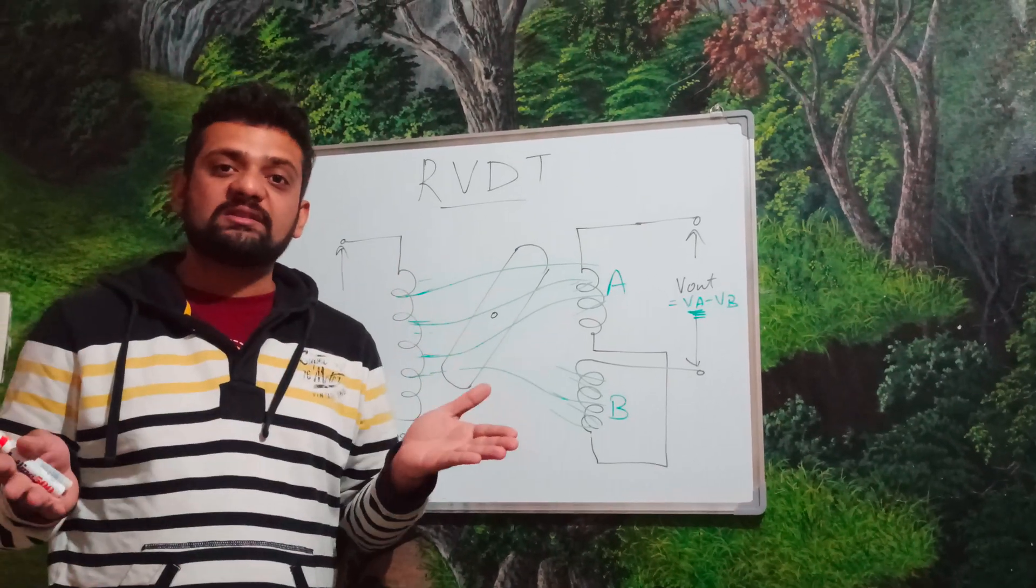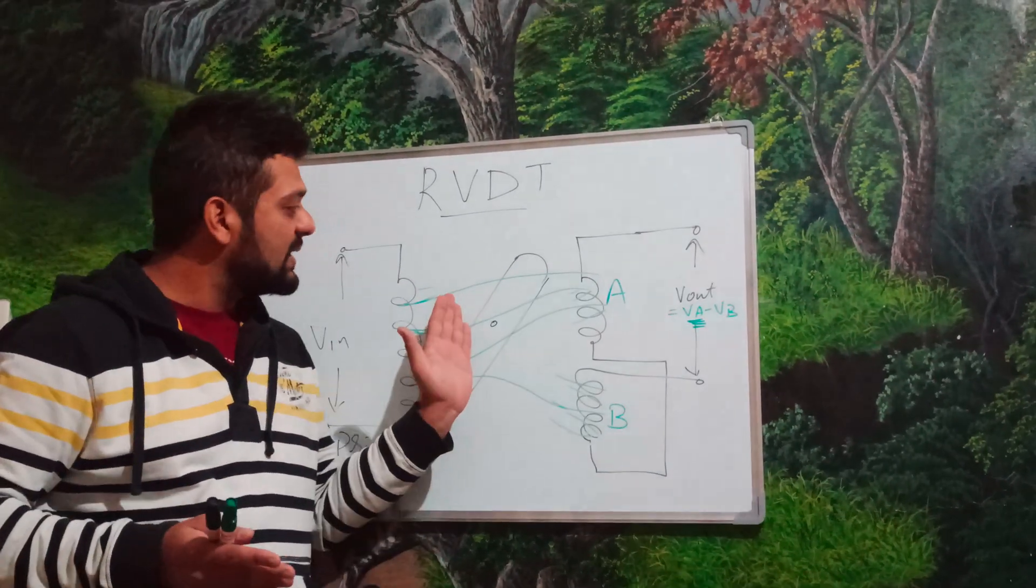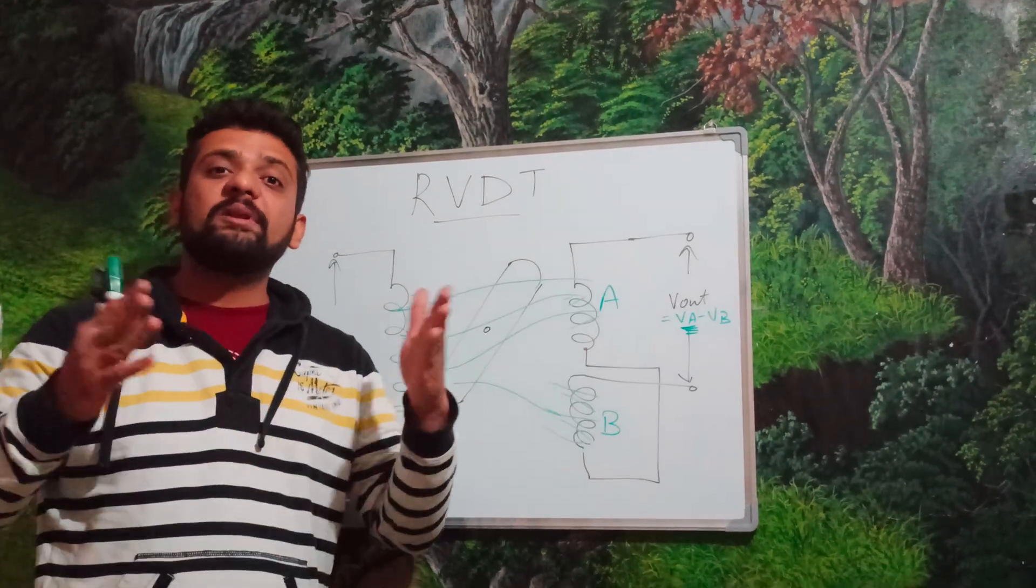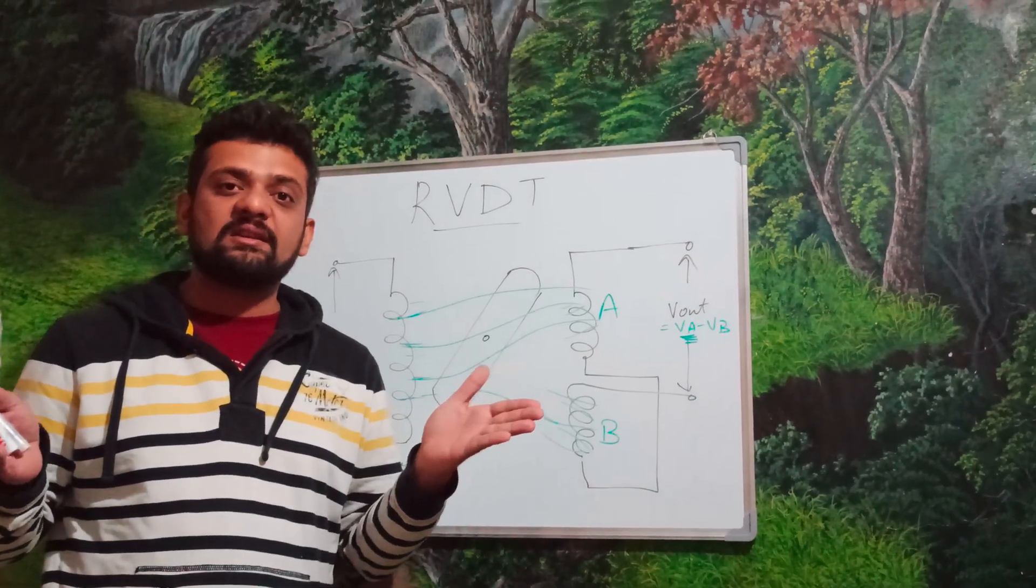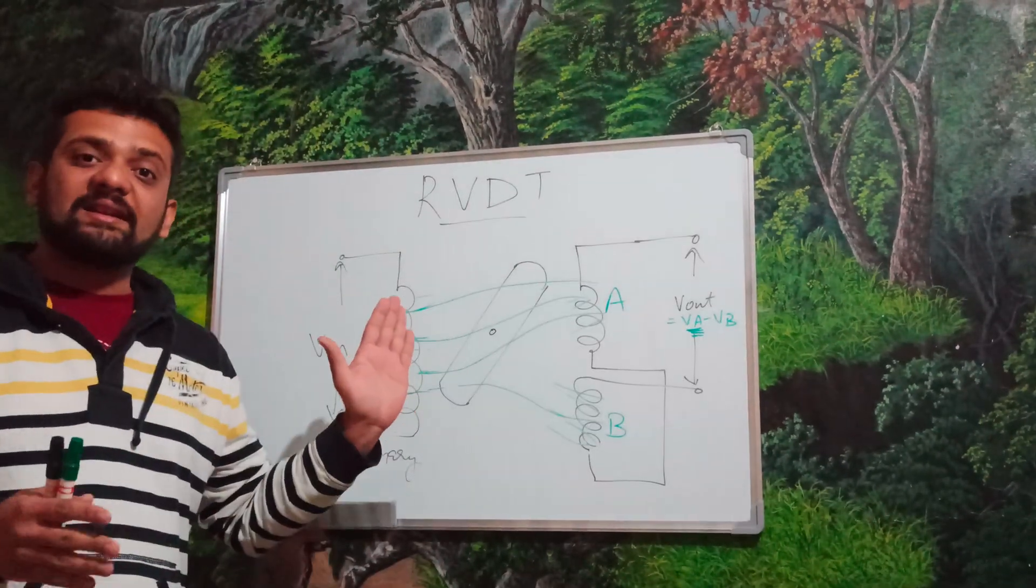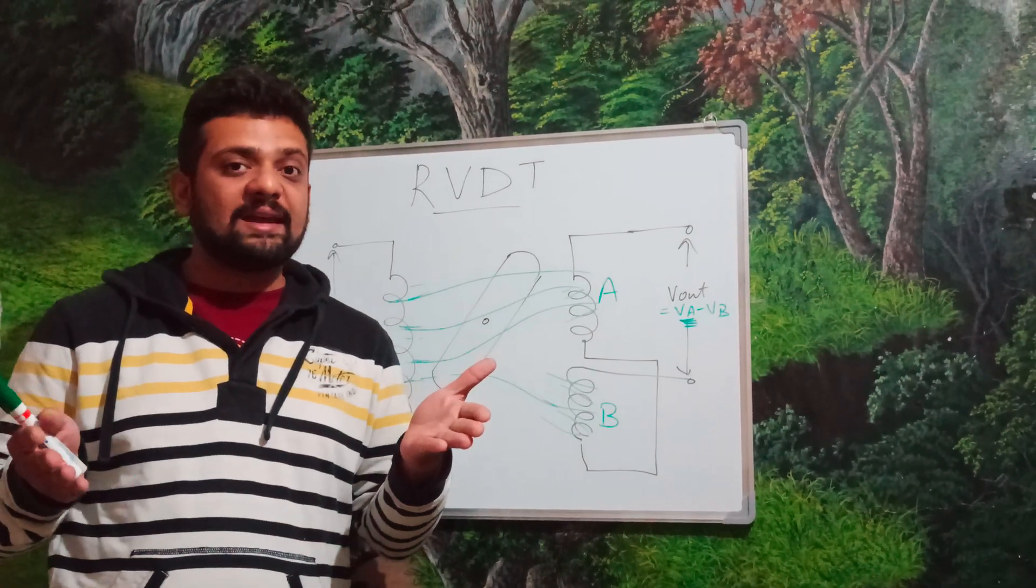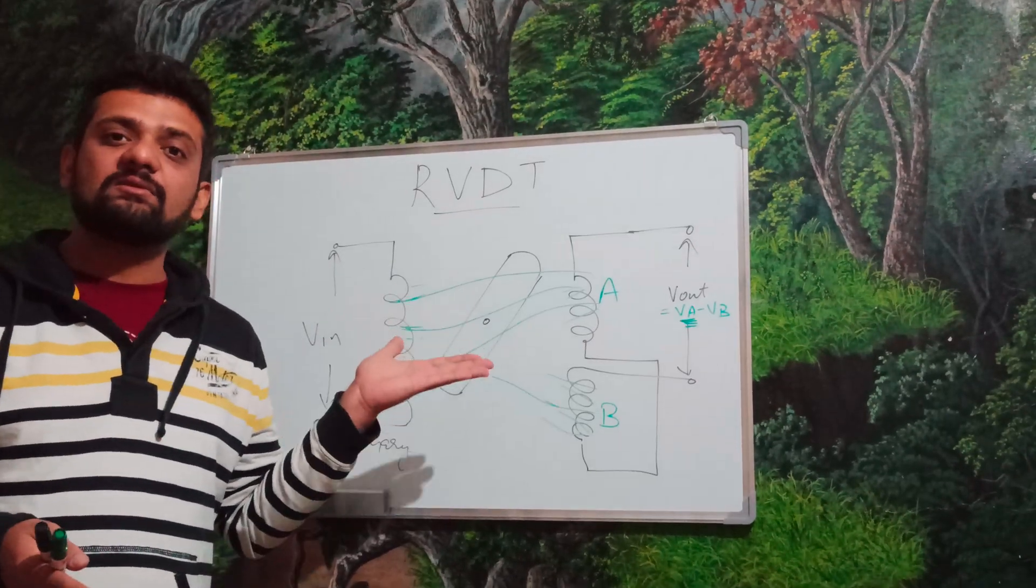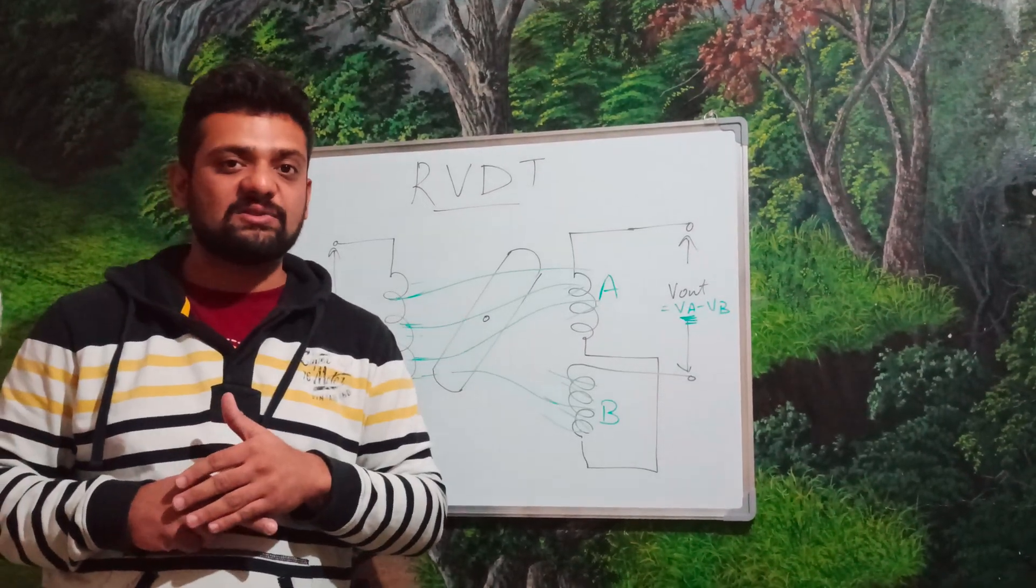This change in voltage, the change in nature of voltage, as we increase the angle, more would be the difference between these two voltages. So, thereby, we can convert this angle, that is a physical quantity, into an electrical quantity. And that is the use, the basic use, of this kind of an electrical transducer.